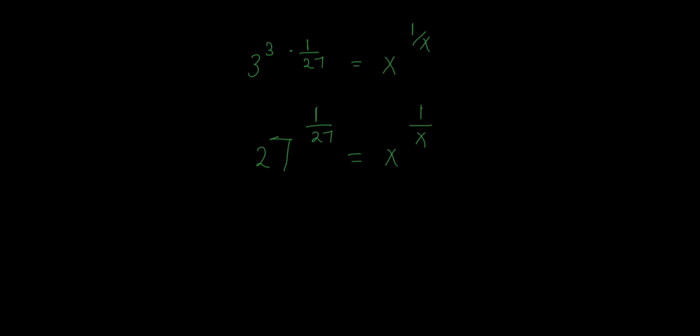So notice that we have 27 and 27, we have x and x. This means that x equals to 27. Thank you.